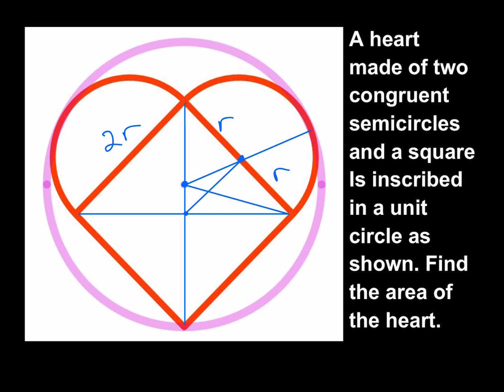If I connect the center of the semicircle to the center of the square, this should be a 90-degree angle, and then this should be a 45-degree angle. Now here's the critical part: I know this length is R and this length is also R. This is a point on both the large circle and the semicircle. Since this is a unit circle, the whole thing from this point to that point is 1. If I subtract R, I get 1 minus R.